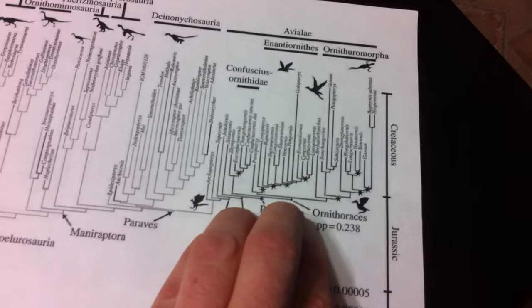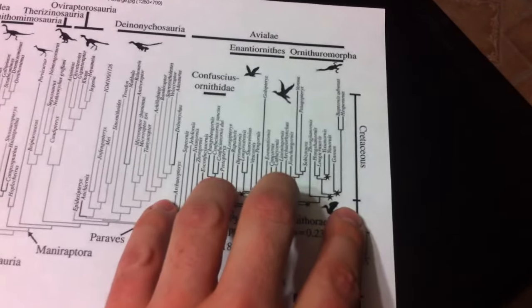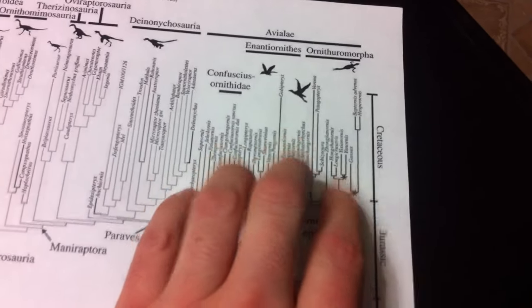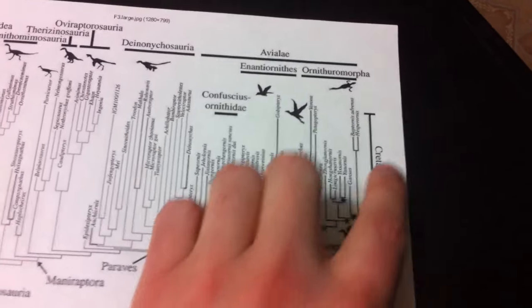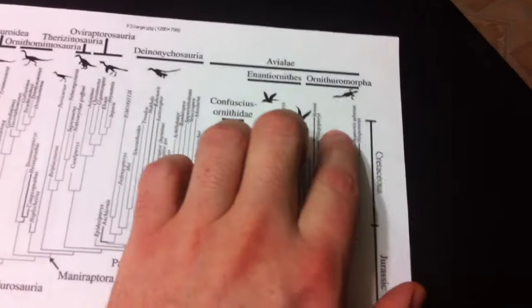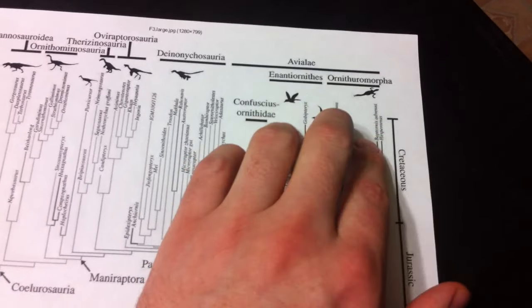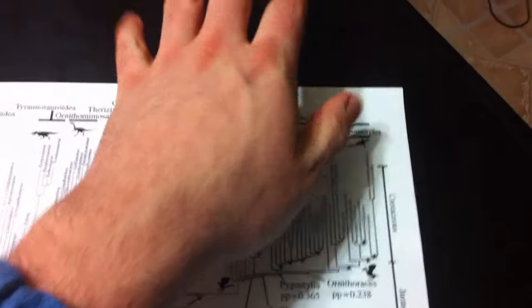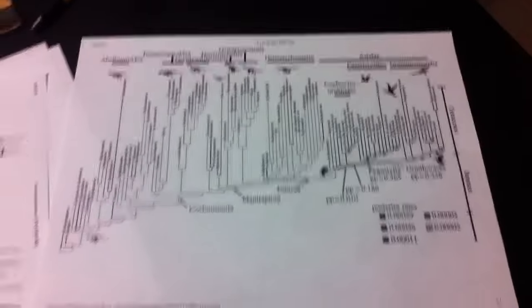Now, many people are surprised to learn that birds actually diversified, and led to many, many different forms. That there was actually a great diversity of birds in the early Cretaceous period, through the Cretaceous period, and that actually birds, like other groups of dinosaurs, were devastated by the extinction at the end of the Cretaceous. Most birds went extinct at the end of the Cretaceous. Just a few forms survived, and then diversified again, in the Cenozoic, leading to the modern diversity of birds.